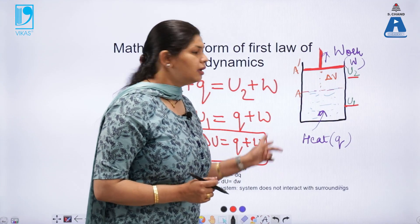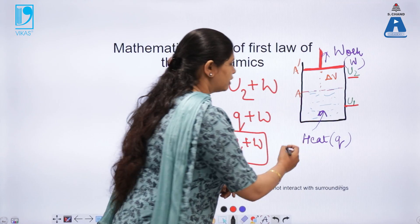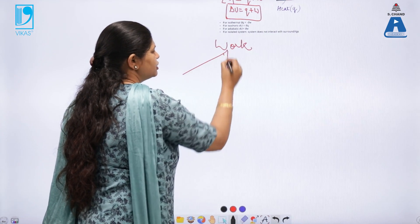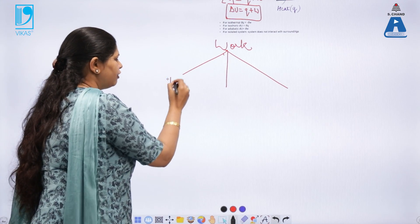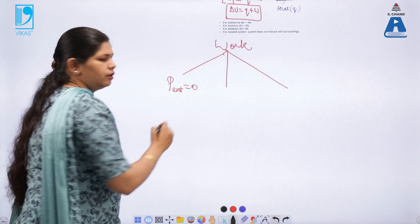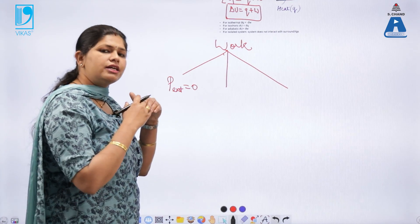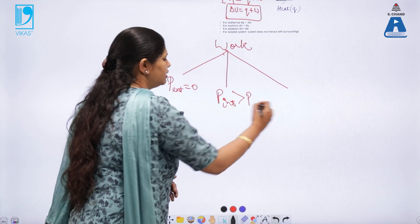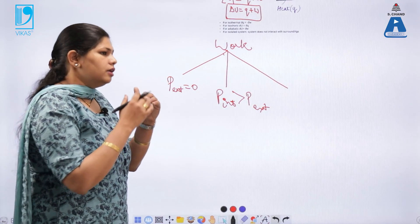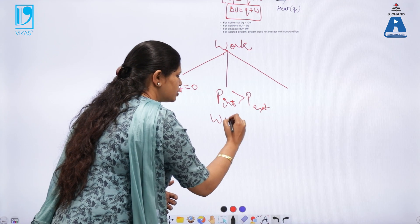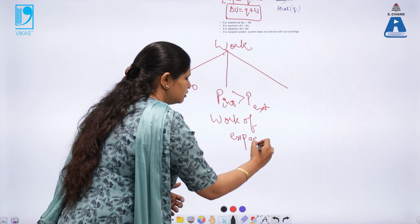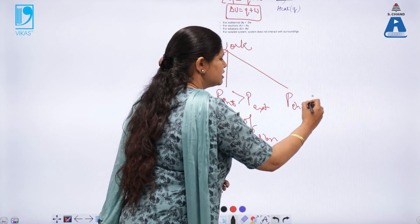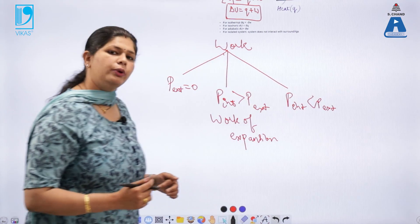And W is my mechanical work, which is PV work. So, this work is categorized into three types. When the external pressure is zero, that is, the expansion is free expansion. When your internal pressure is greater than external pressure, this means that the system will expand or work of expansion will take place. And if you have P internal lesser than P external, then compression work will take place. So, these are the three types.